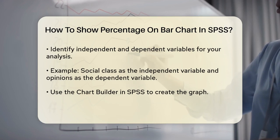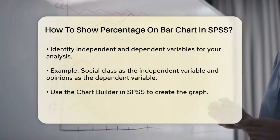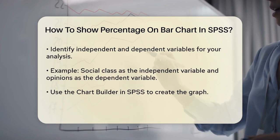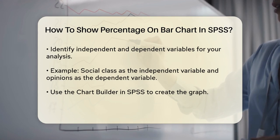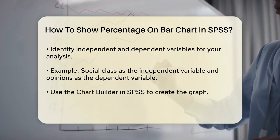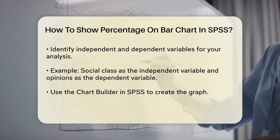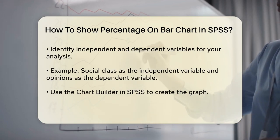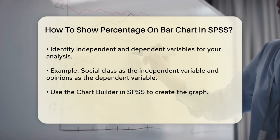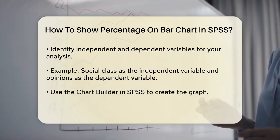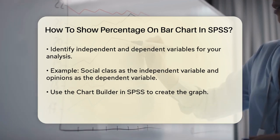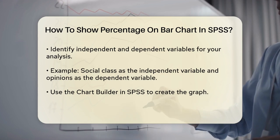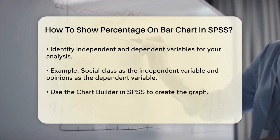In SPSS, you'll use the chart builder to create your graph. Place your independent variable on the x-axis and your dependent variable on the y-axis. By default, SPSS will show counts, but you want percentages. To change this, go to the properties box and select percent instead of count.